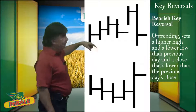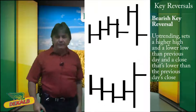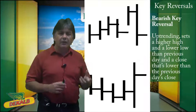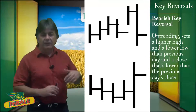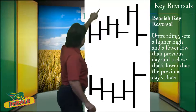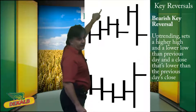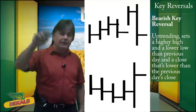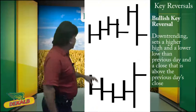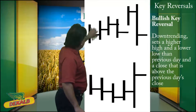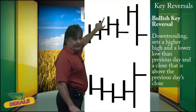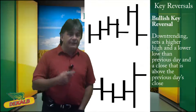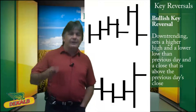We're going to start with the bearish key reversal at the top here. Basically an uptrending market sets a higher high and a lower low than the previous day, and a close that's lower than the previous day's close. You can see that the last tick here is wider than the previous day, but then closes lower — that's a signal that maybe that uptrend has come to an end. A bullish key reversal is actually the opposite, where the day's range is wider than the previous day and then closes higher. You need two or three more days of higher closing highs in order to confirm this key reversal trend.